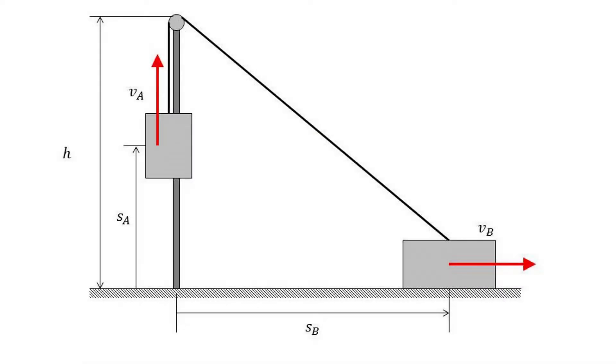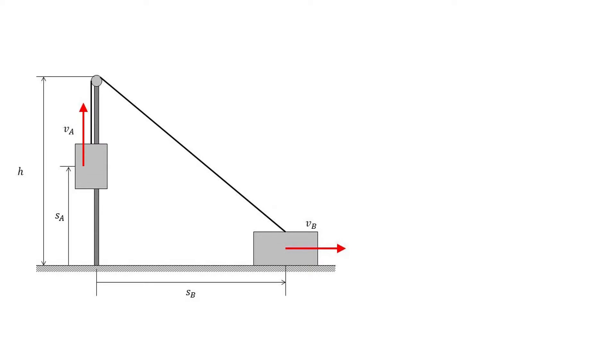The first scenario is a horizontally moving cart connected by a string to another cart hanging over a pulley. In order to derive the relationship between the positions and velocities of both carts, we first write the expression for the length of the string, assuming the pulleys have small enough radii to be negligible.